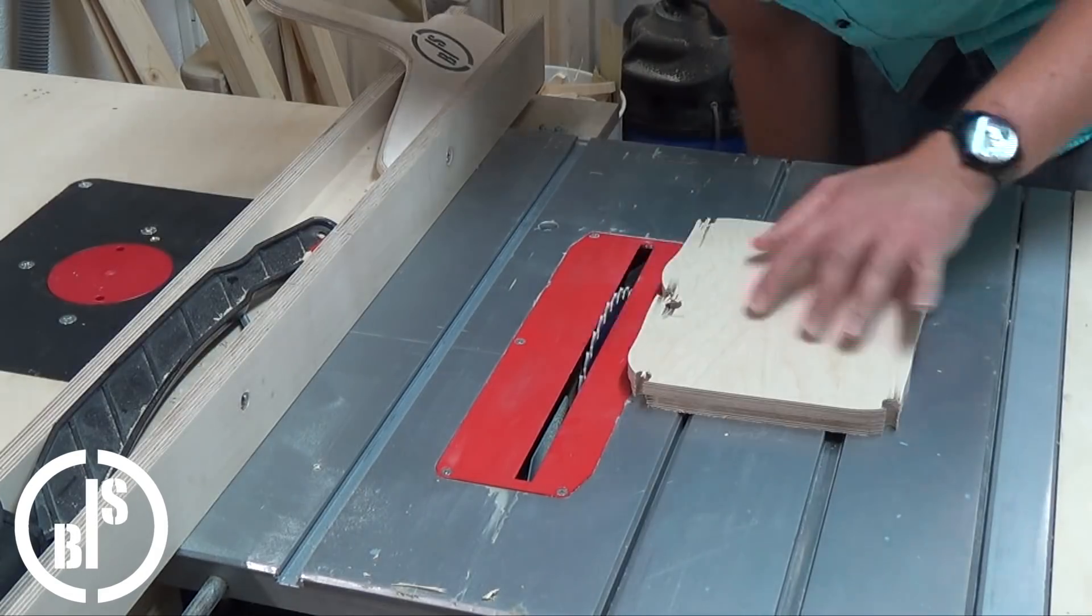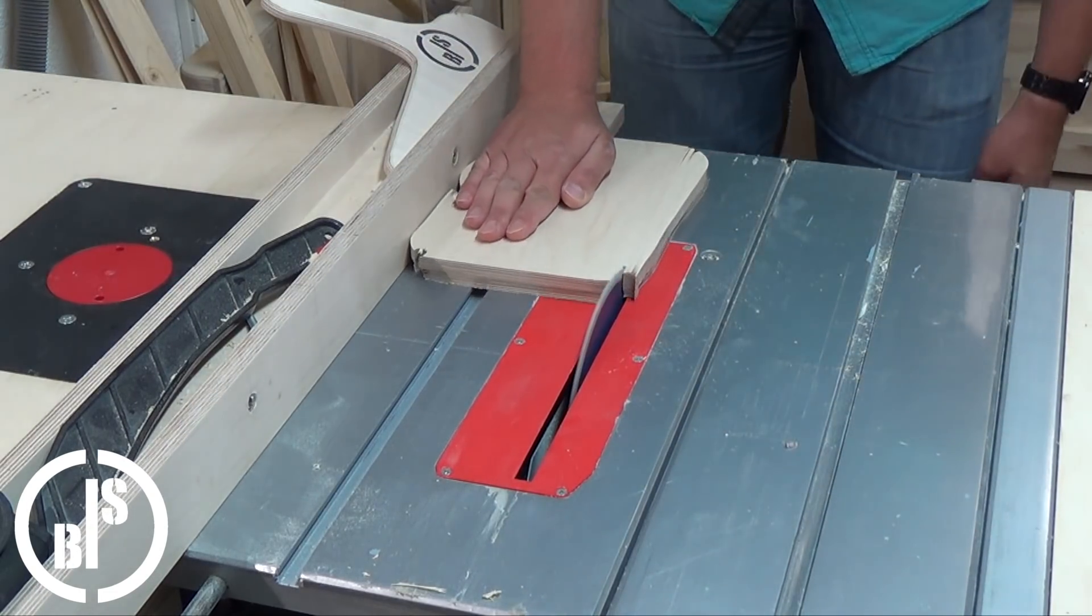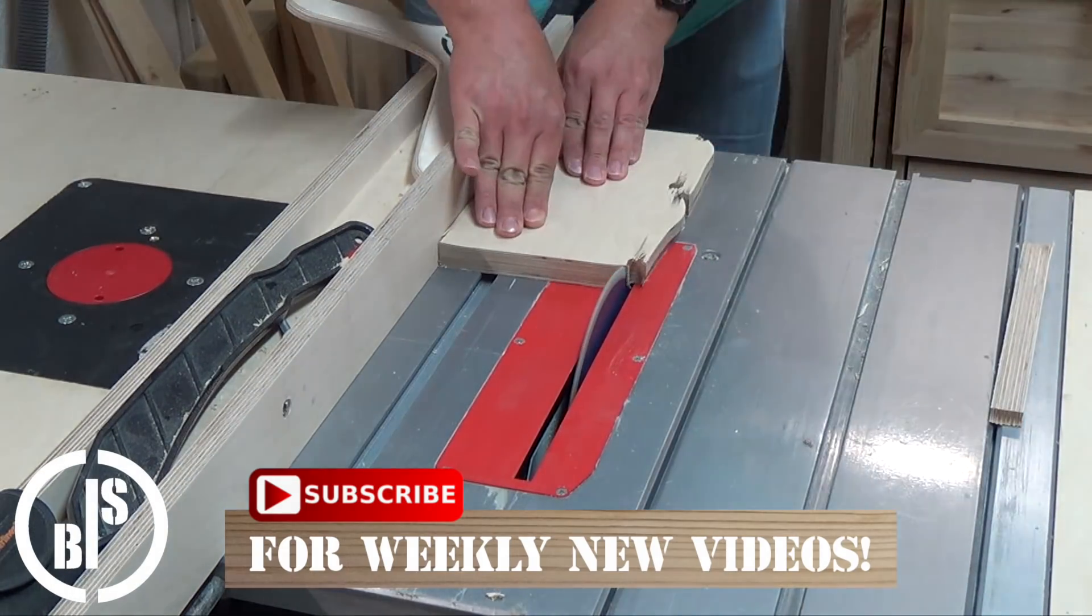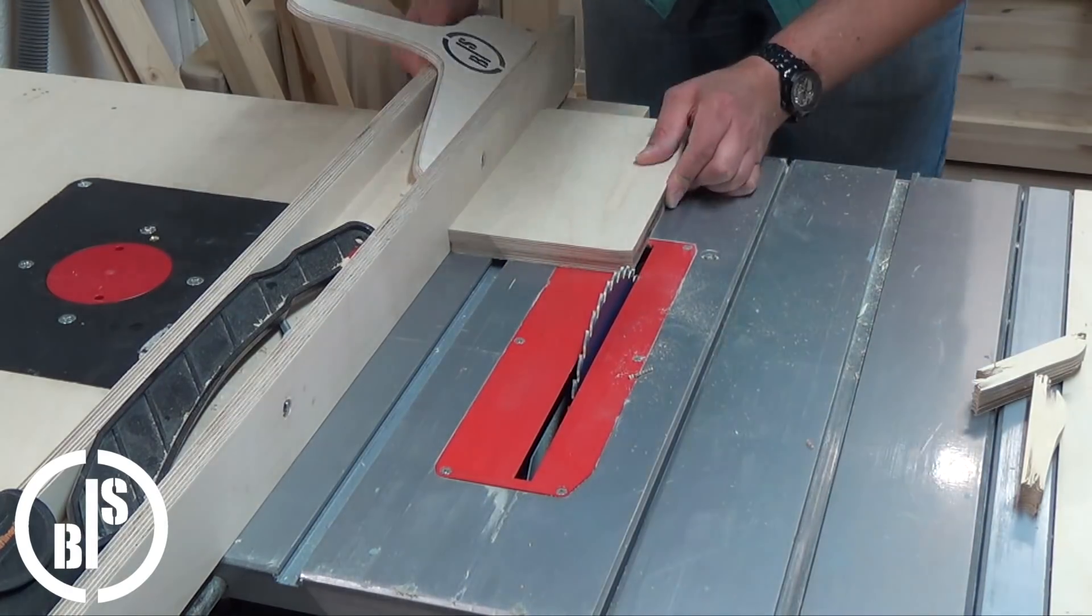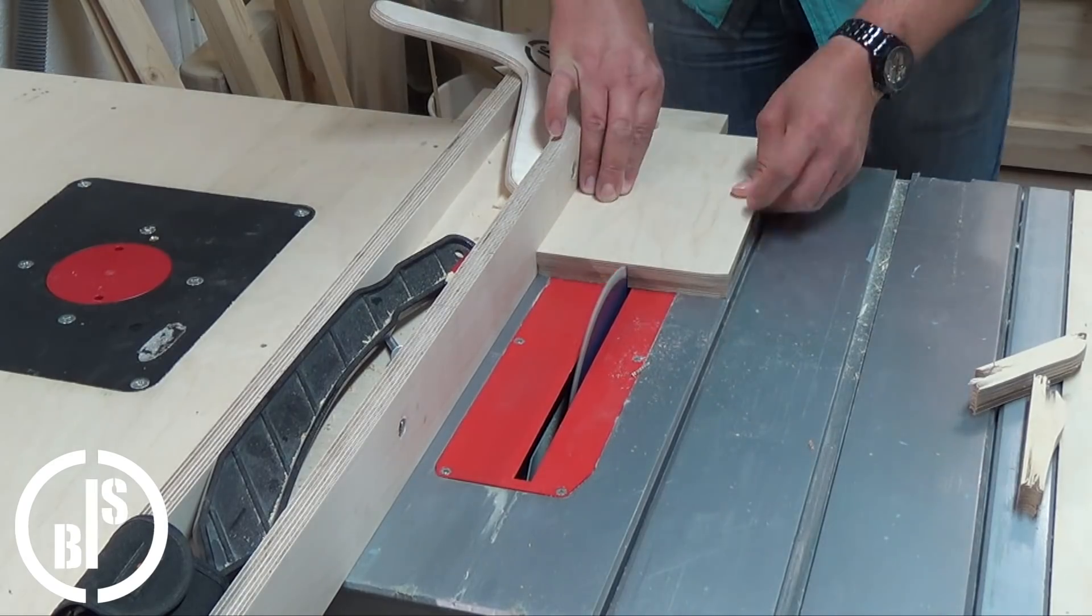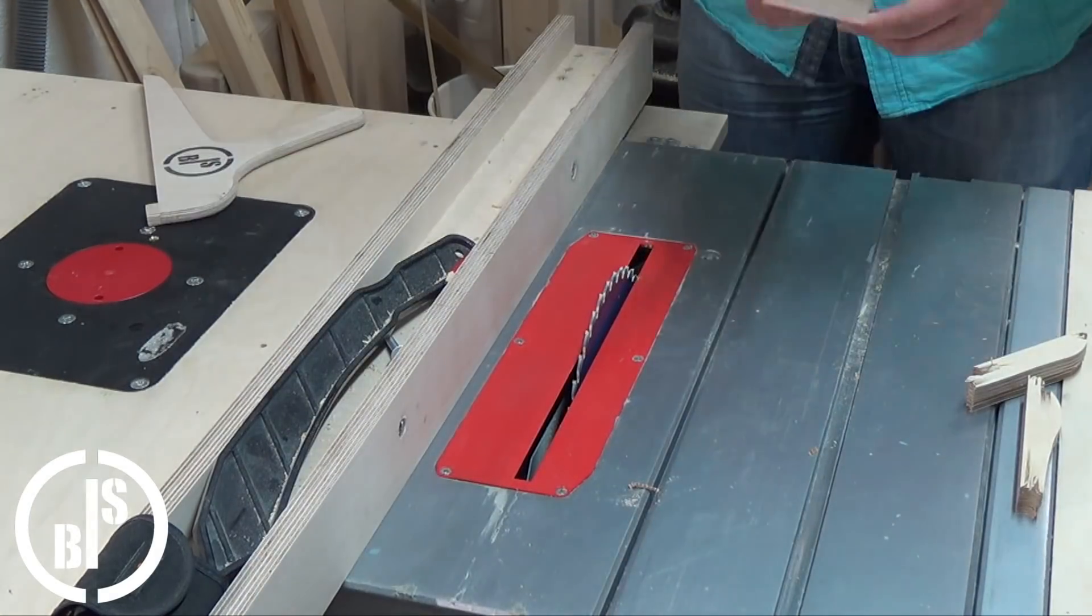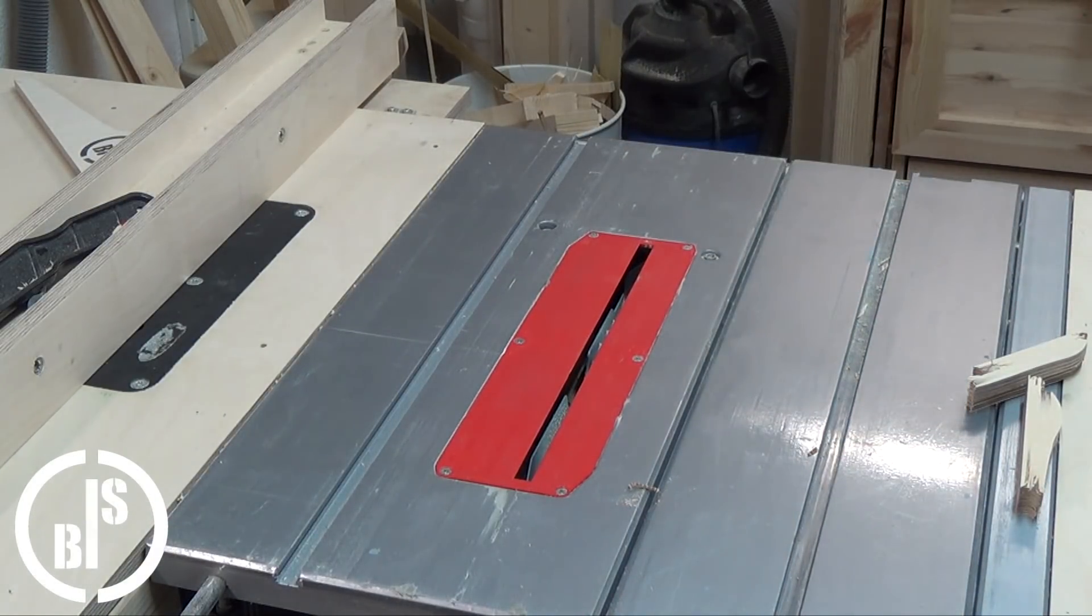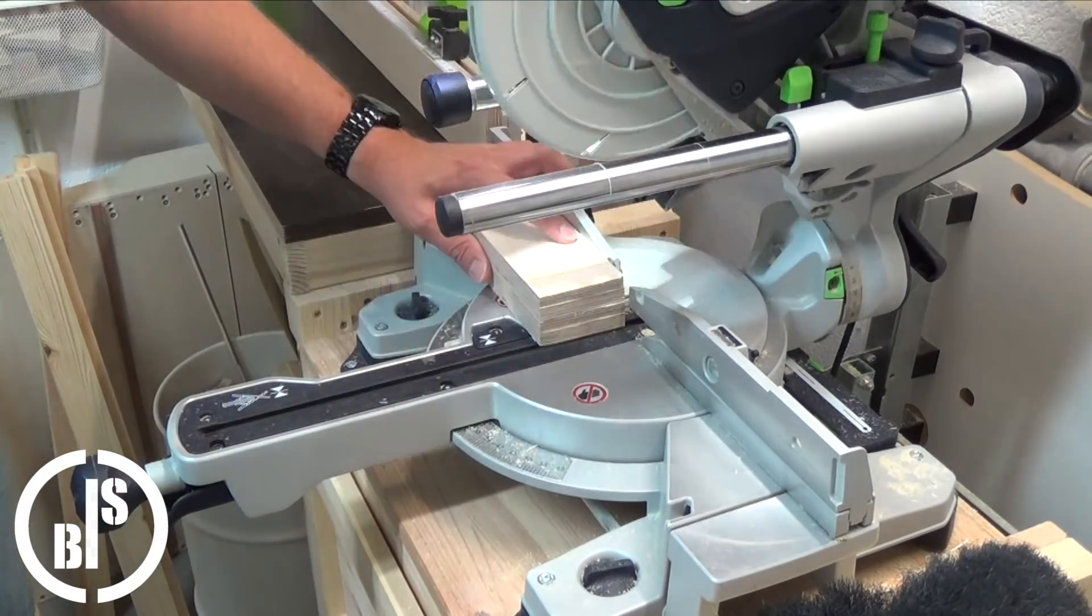First I take the cut out piece from my router table and cut it to two identical pieces. These pieces will be the bottoms of the push blocks. Then I cut them to the right length on the miter saw.